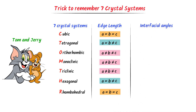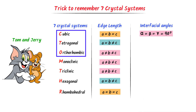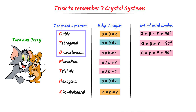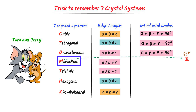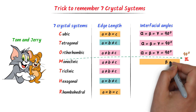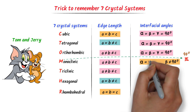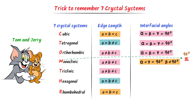What about their respective interfacial angles? The first three systems have the same angles. For monoclinic, if you rotate the letter M 90 degrees clockwise and draw a line, it looks like the Greek letter beta. This reminds us that beta is not equal to 90 degrees. The remaining two angles are: alpha equals gamma equals 90 degrees.